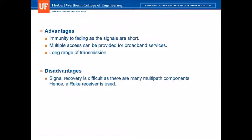Advantages of ultrawideband communication: it has immunity to fading as the signals are very short, so it can transmit signals without any loss of energy. Multiple access can also be provided, as the data link layer standards have been developed. Due to the short signal duration, a long range of transmission can be achieved. A disadvantage is that the signal is divided into many multipath components when transmitted, making it difficult to recover all the components. To overcome this, a rake receiver is used.